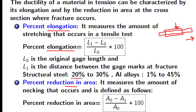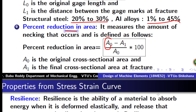For steel, percentage elongation is anywhere between 20 to 30 percent; for aluminium it can be between 1 to 45 percent depending on alloy composition. Similarly, percentage reduction in area is defined as (initial area minus final area) divided by initial area. Note that L1 (final length) is always greater than L0, so percent elongation is always positive; and initial area is always greater than final area, so percent reduction in area is also always a positive quantity.